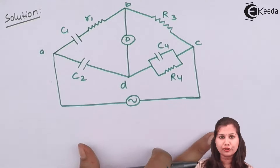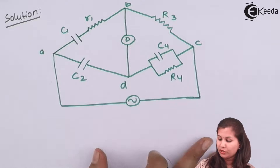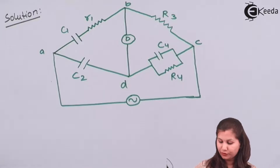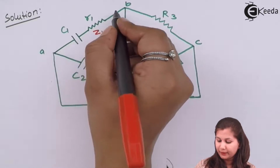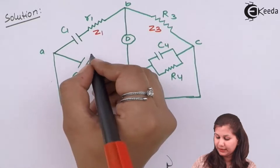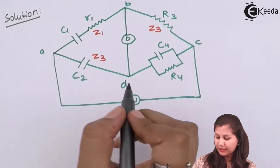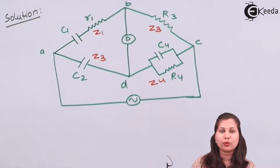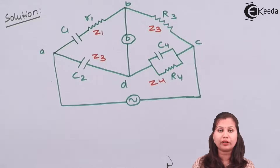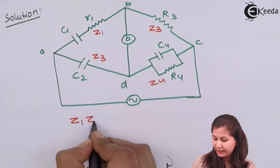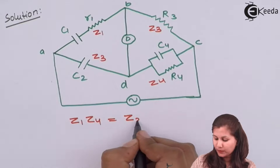This is the circuit for the Schering bridge. When the bridge is under the balance condition, Z1 is the impedance in arm AB, Z3 is the impedance in BC, Z2 is the impedance in arm AD, and Z4 is the impedance in arm CD. Under balance condition, the general balance equation for an AC bridge is Z1·Z4 = Z2·Z3.